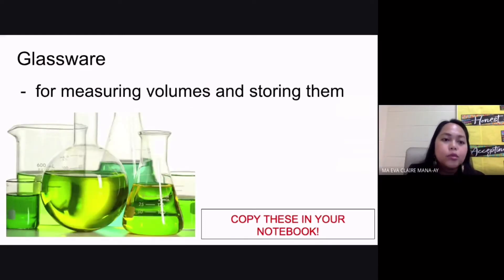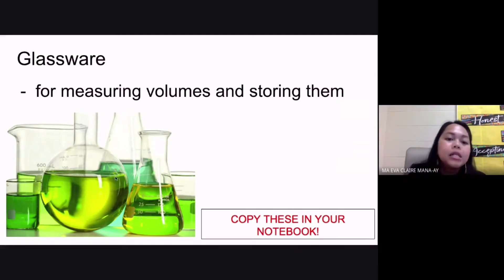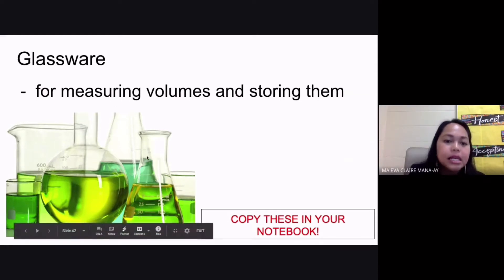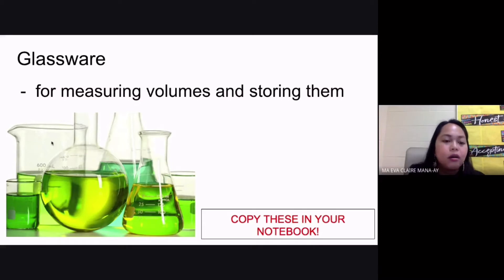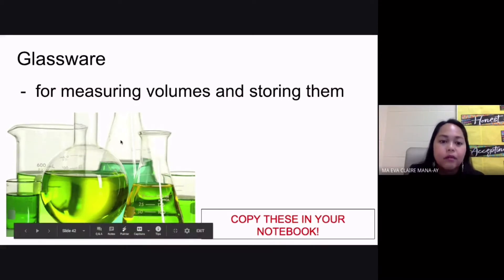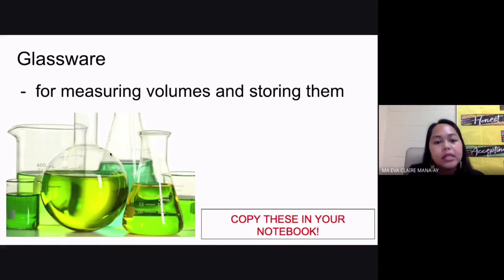The first one, of course, would be your glassware. Your glassware is usually used for measuring volumes and for storing them. You can have your graduated cylinder — your graduated cylinder is still part of your glassware. Your flask, different types of flask, different types of beakers can be found under your glassware. So you have your Erlenmeyer flask, your distilling flask, your beakers — these are all different types of glassware that you have in your lab.